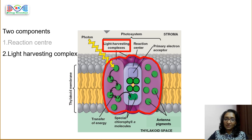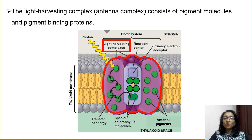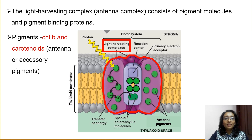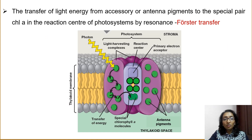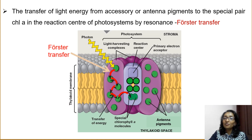Now let's discuss about the light harvesting complex, also called the antenna complex, which consists of pigment molecules and pigment binding proteins. The pigments in the light harvesting complex consist mainly of chlorophyll B and carotenoids. They are called antenna pigments or accessory pigments. The light harvesting complexes capture light energy and increase the efficiency of photosynthesis. Some chlorophyll A molecules will also be present in the light harvesting complex. The antenna pigments are named so because they form an antenna-like network for the gathering of light. Almost all the light energy absorbed by accessory pigments is transferred to the special pair of chlorophyll A molecules in the reaction center by resonance. This transfer is also known as Förster transfer.